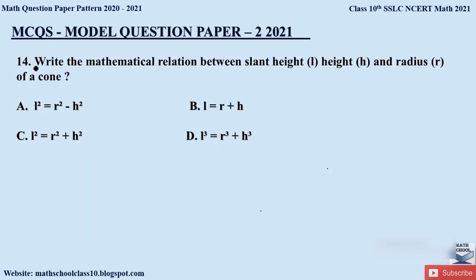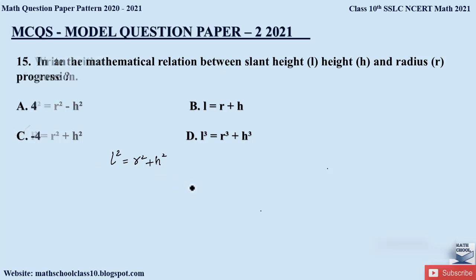Question 14: Write the mathematical relationship between the slant height l, height h, and radius r of a cone. The relationship is l² = r² + h². The correct option is option C. Please make a note of all these formulas as these are direct questions that can be asked in your MCQs.